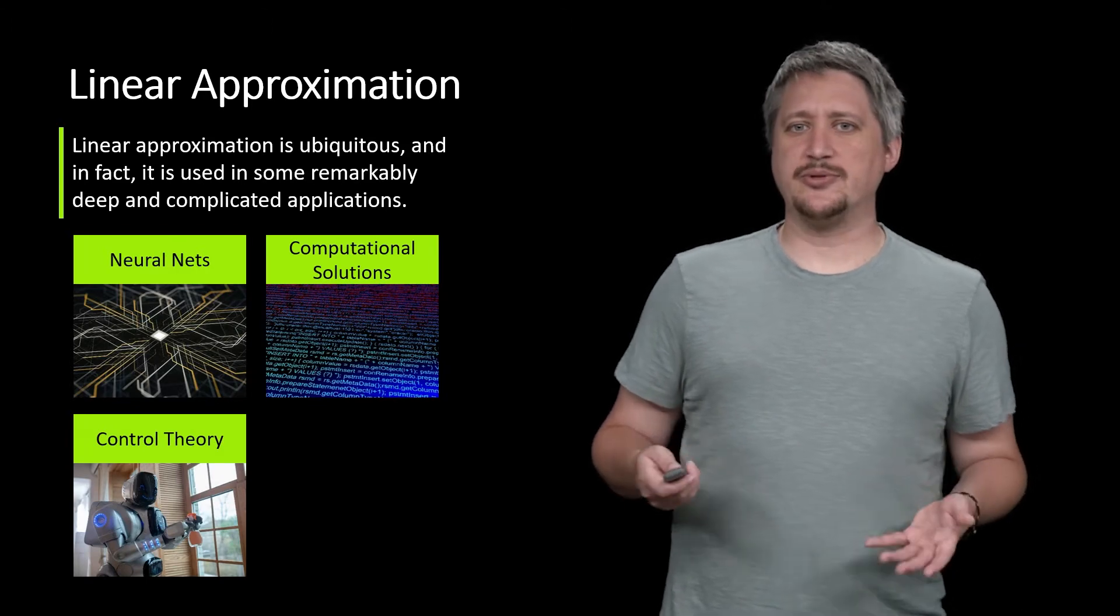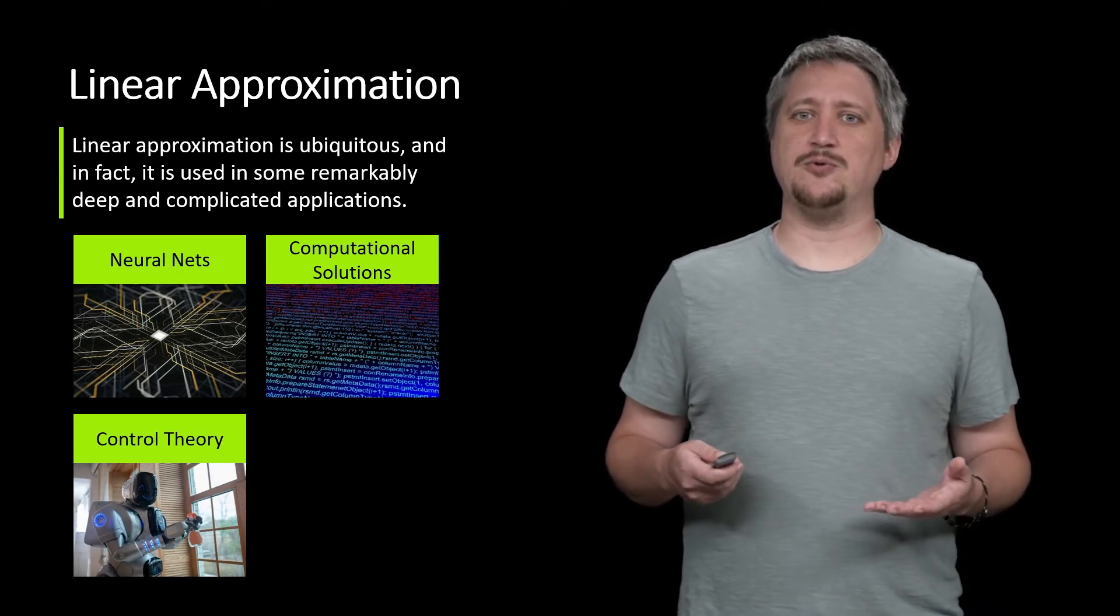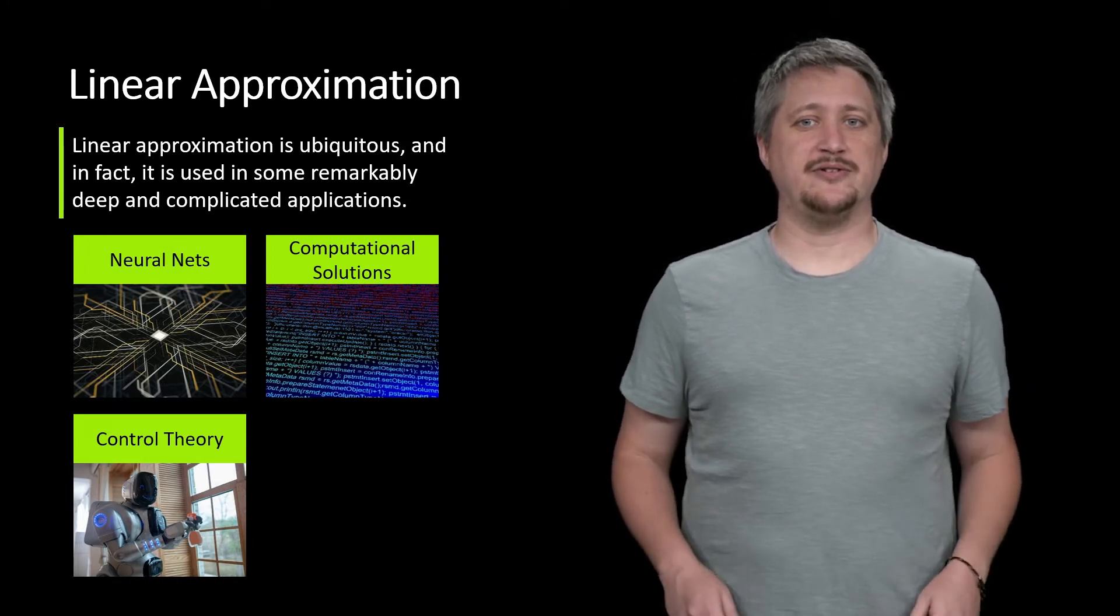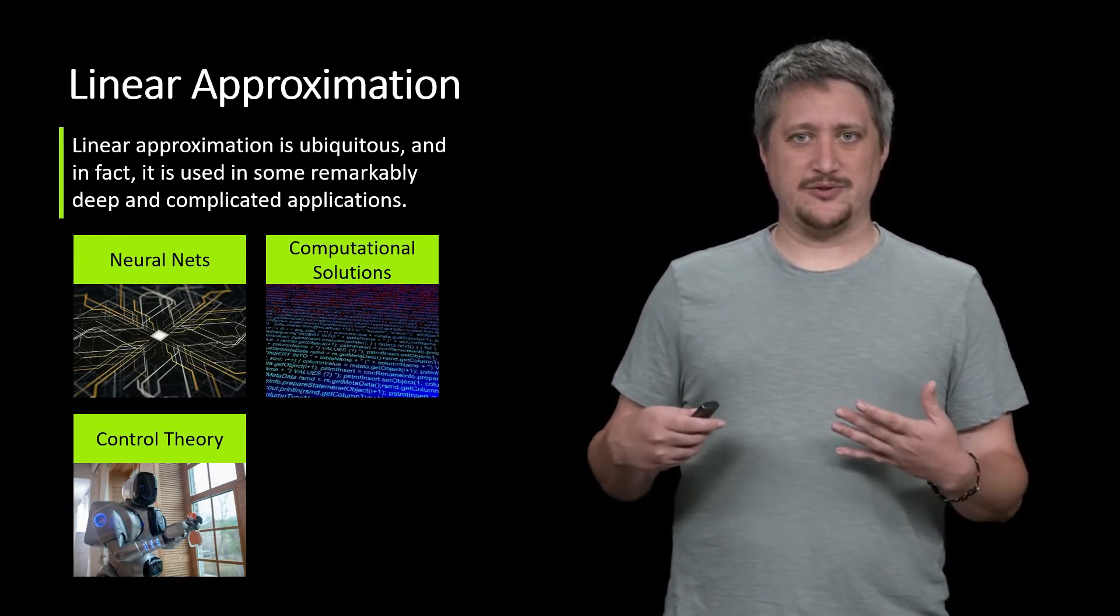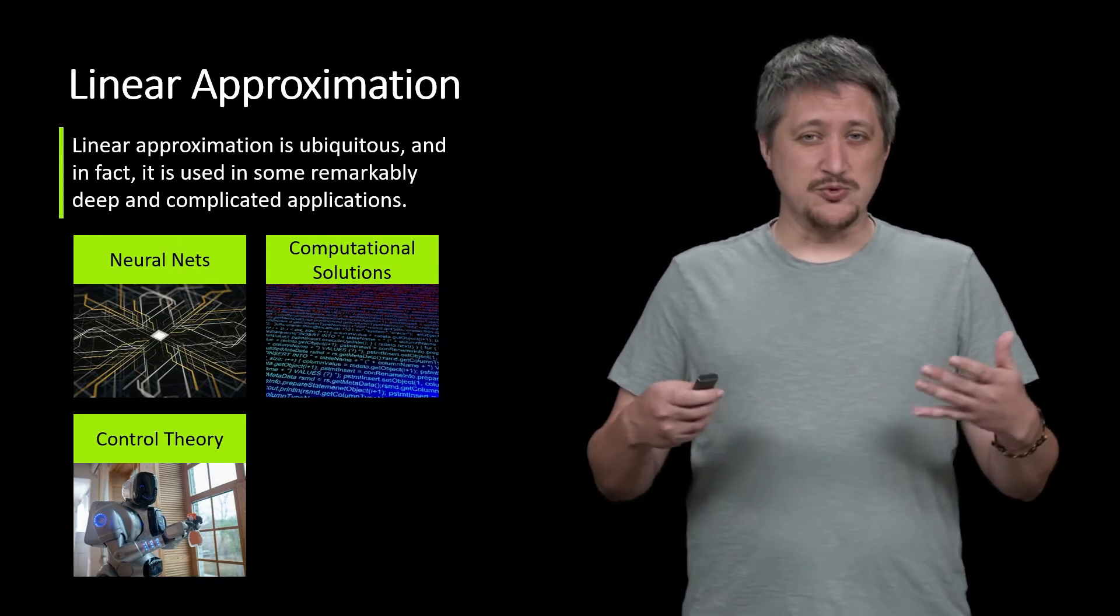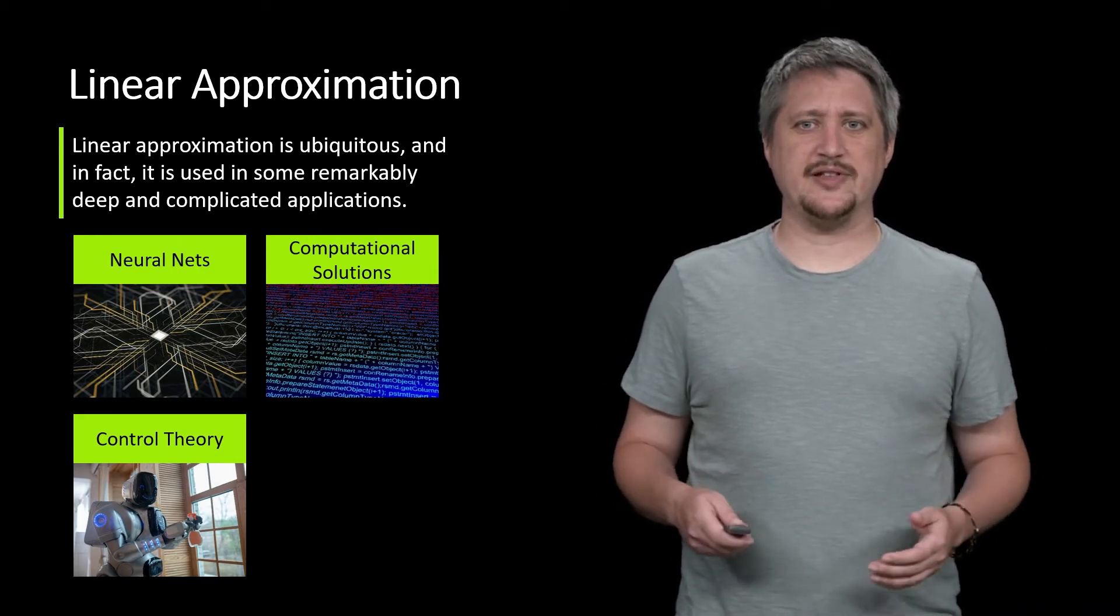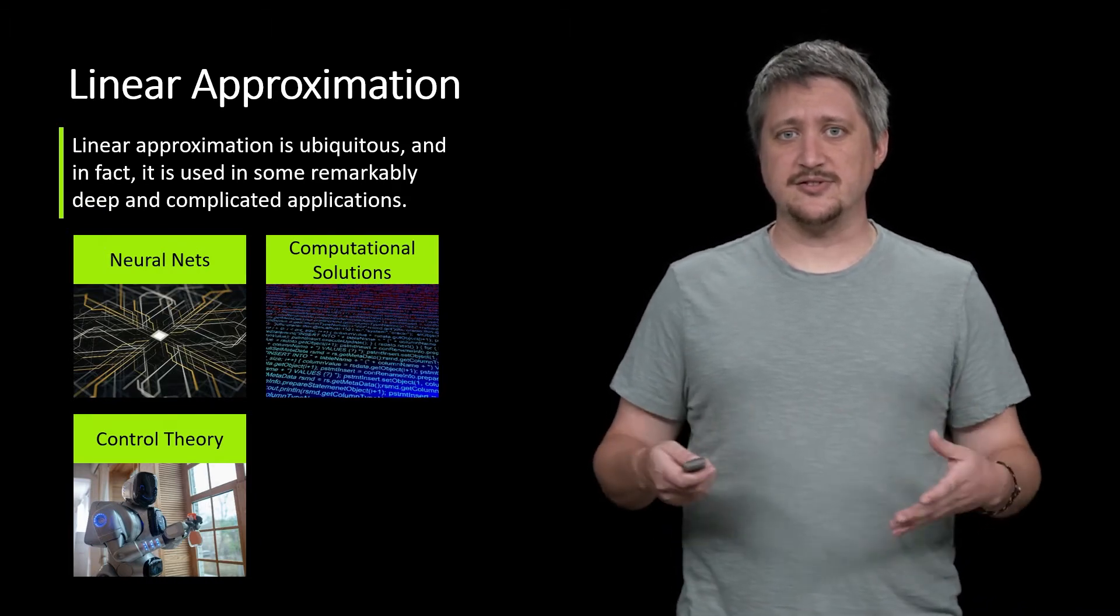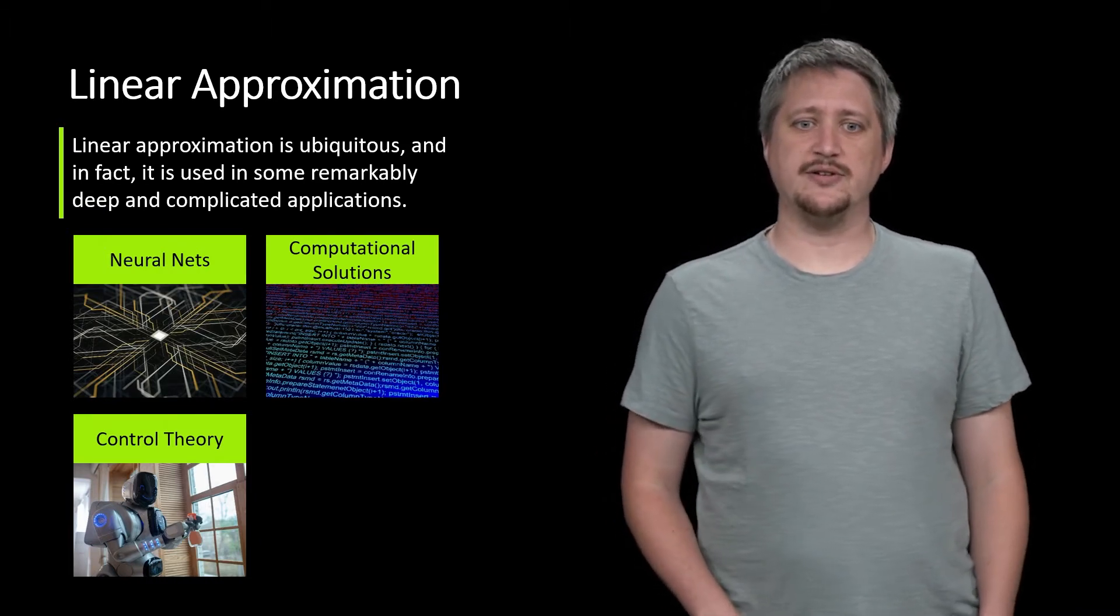Control theory is this idea of how robots understand the environment they're around. We use this for what you might think of like house robots like Roombas, but also things like getting feedback on artificial limbs. These are things that use linear approximation in control theory.